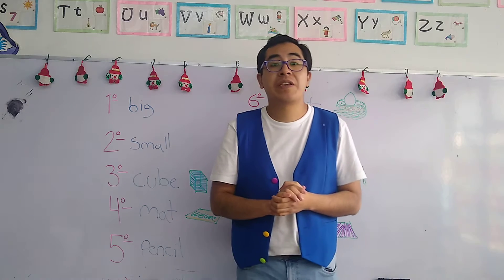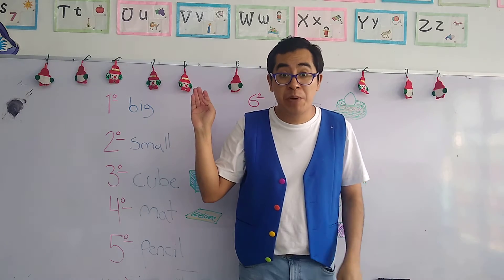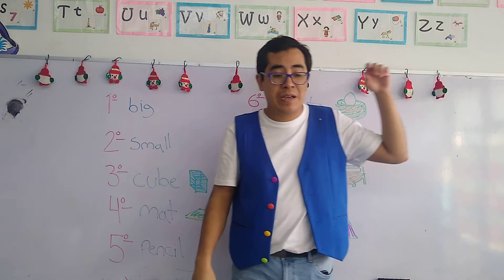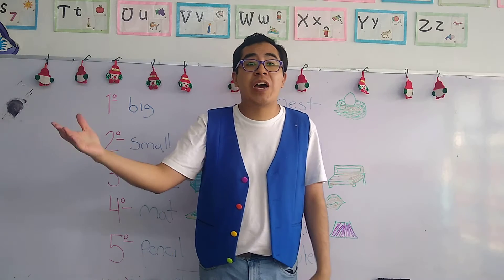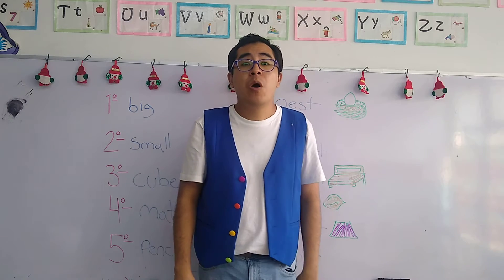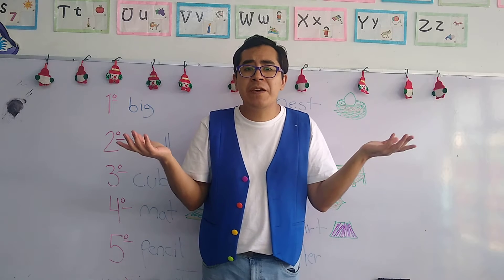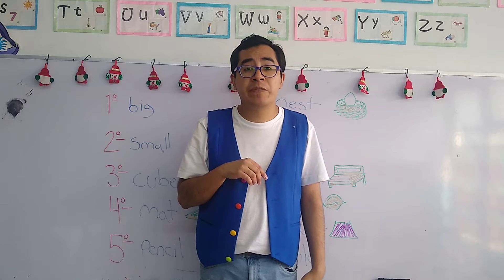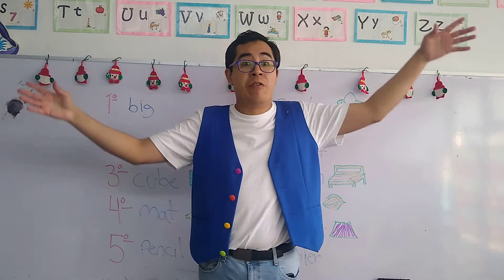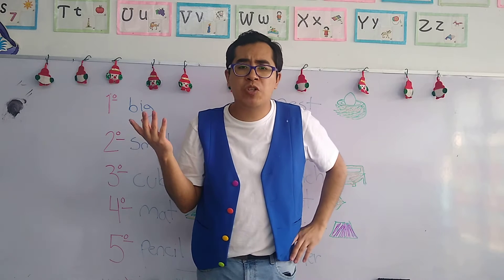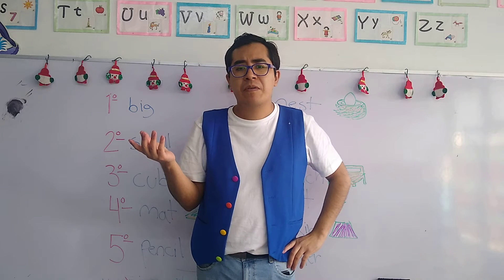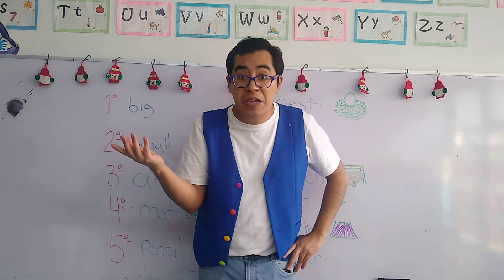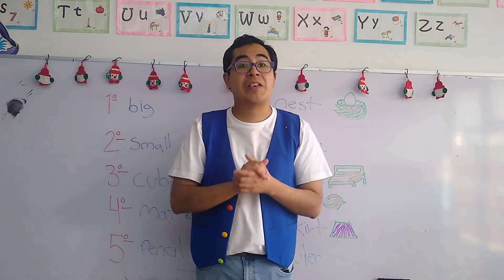The first word that we have on the whiteboard says "big." Now, remember, whenever we mention "big," we can mention the size of a person or the size of an object. For example, objects that are big — we have a whale. Do you remember the whale? It's an animal of the sea, and whales are very big. Trees are also very big.